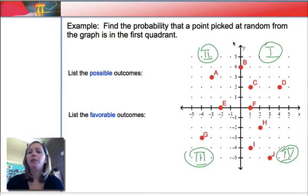Great. So if we want to find the probability that a point picked at random is in the first quadrant, the first thing we want to do is list the possible outcomes. And obviously, those are all the letters, or all the points, A, B, C, D, etc. But let's count how many points there are. 1, 2, 3, 4, 5, 6, 7, 8, 9, 10. There's 10 of them, right? There's 10 total possible outcomes.